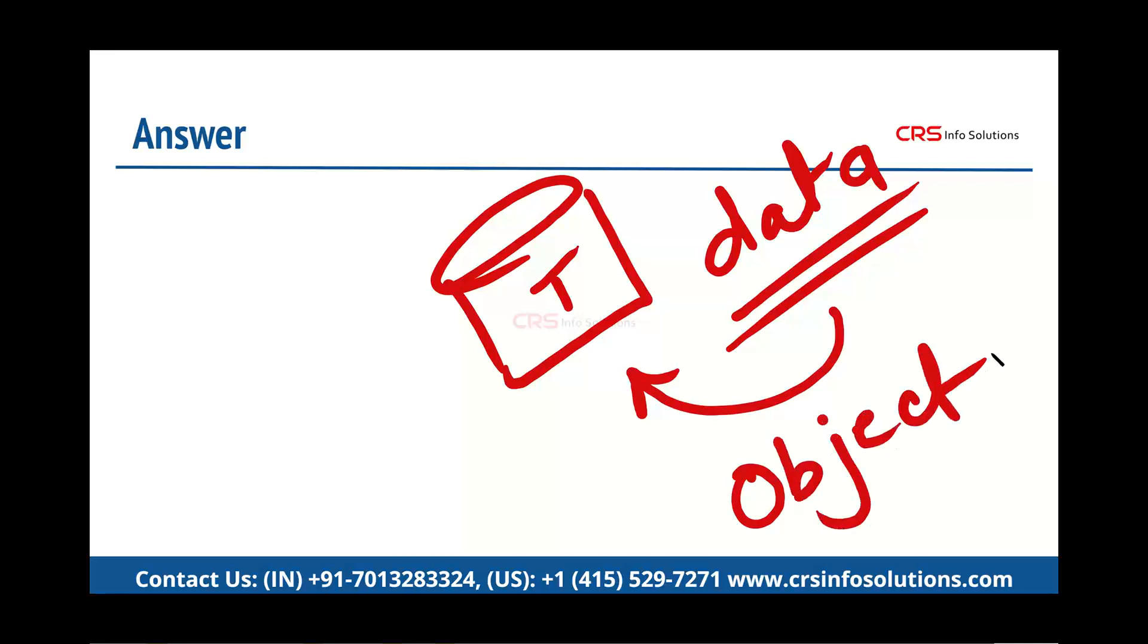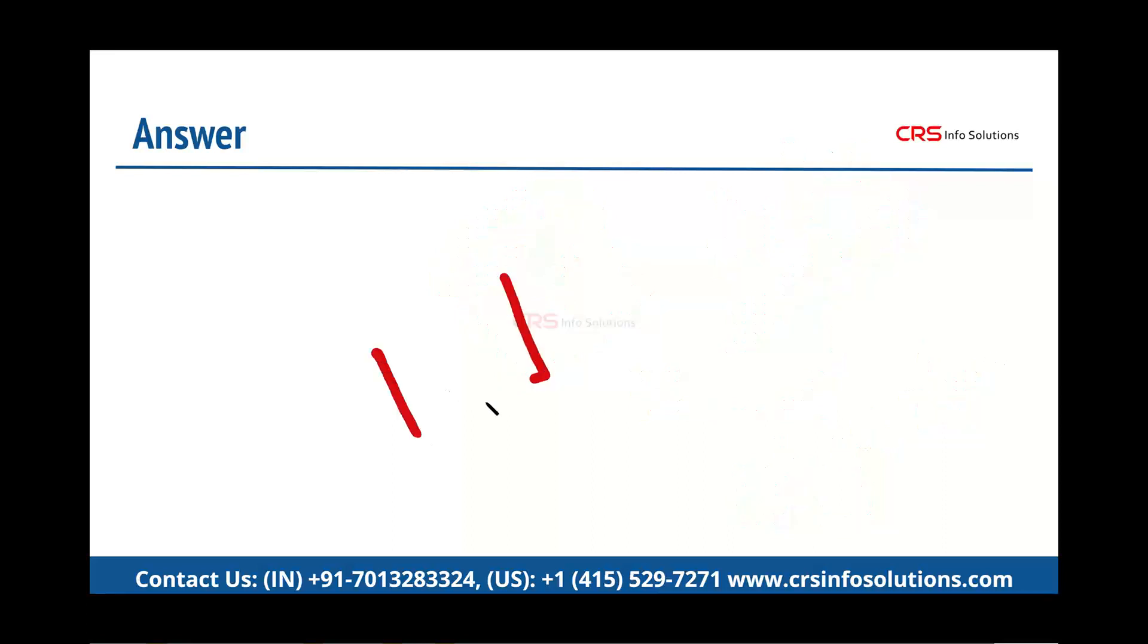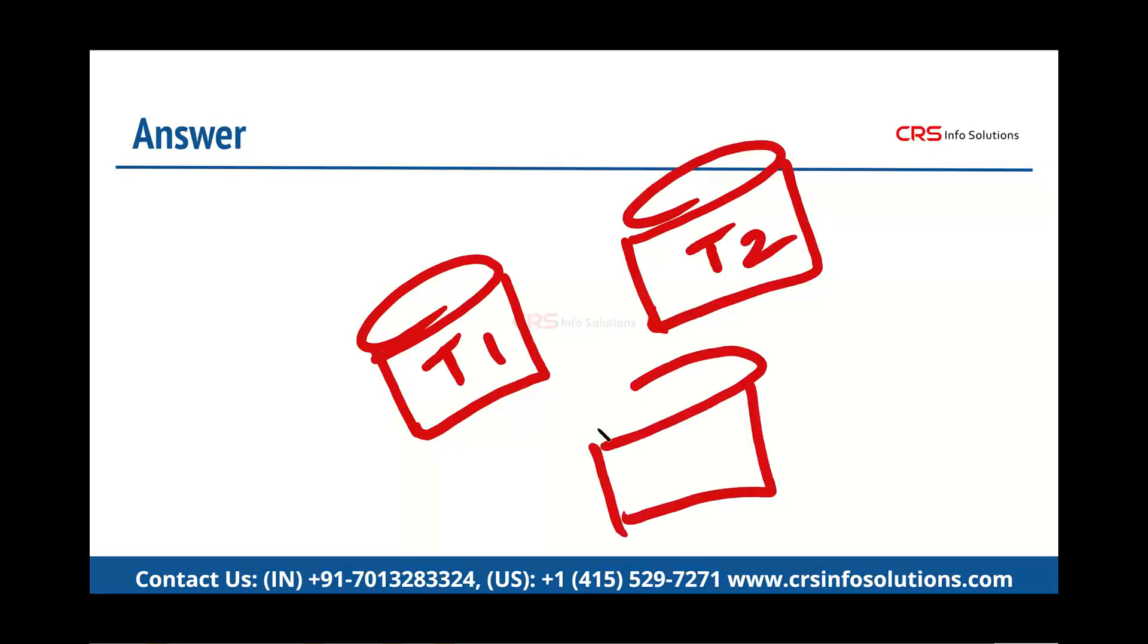So please note object is nothing but a database table or a table. But when we connect such multiple tables together, like table one and table two and table three with the relationship with each other, then this entire system or structure is called as a database.